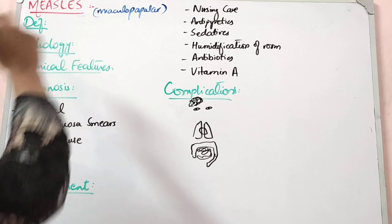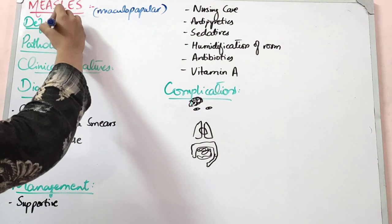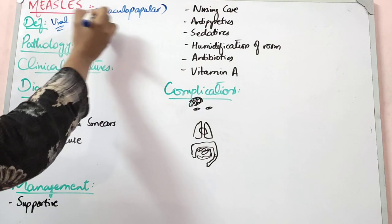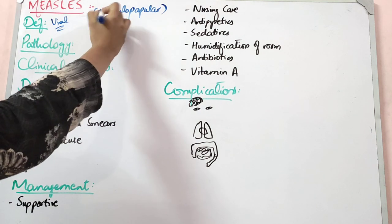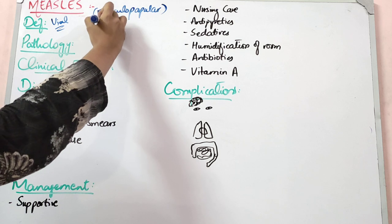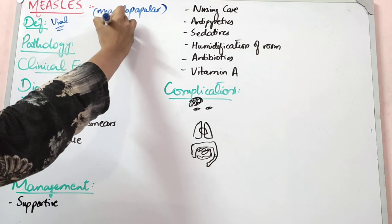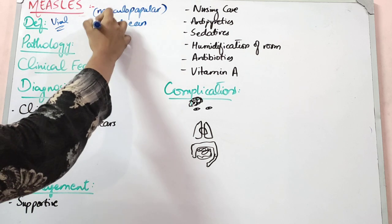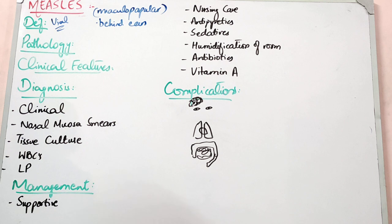Another important thing about measles is that the rash always starts behind the ears, then spreads to the face. It starts with the face and then spreads downward to the whole body. This distribution pattern is a key feature of measles.